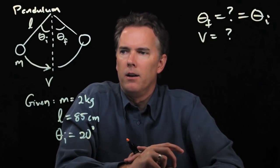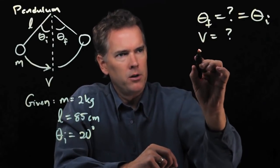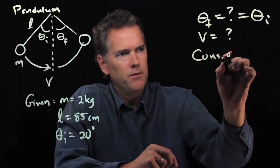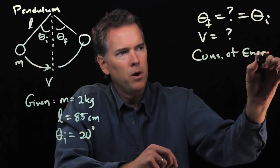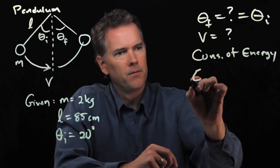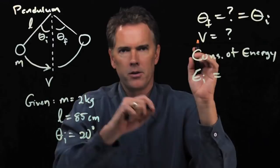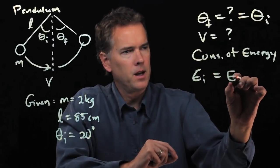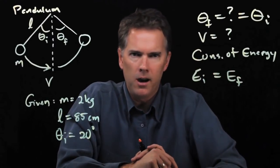To get v, we're going to use conservation of energy, and the initial position is going to be where it starts. The final position is going to be at the bottom. So, Ei equals Ef.